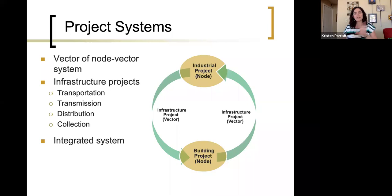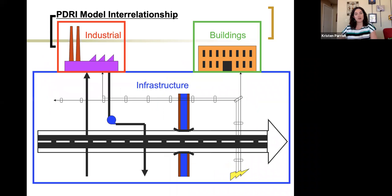This is obviously an integrated system, and the PDRIs are actually designed with that in mind. So looking briefly at how the PDRIs connect together, it's very similar to that project system slide previously, just illustrating how we have industrial projects, building projects, and infrastructure projects. And these red, green, and blue boxes outline the types of PDRIs that we have. So to date, we have a small and large industrial projects PDRI, and we have a large buildings PDRI.